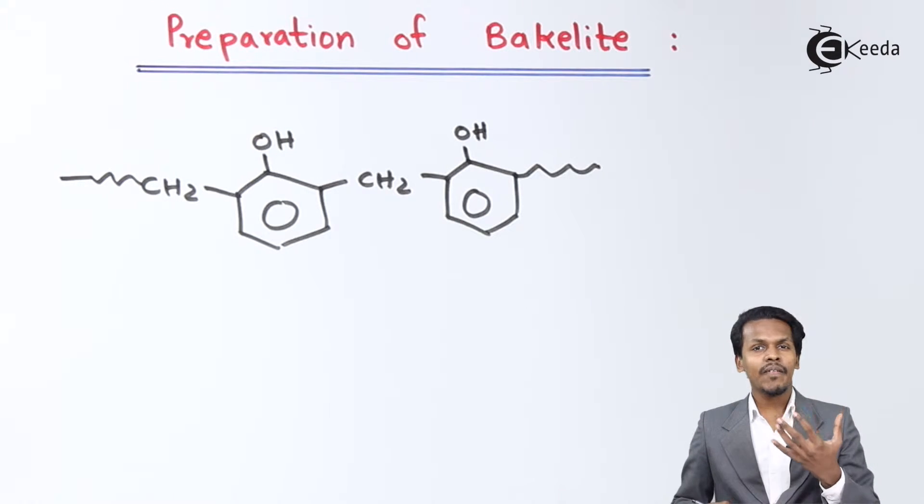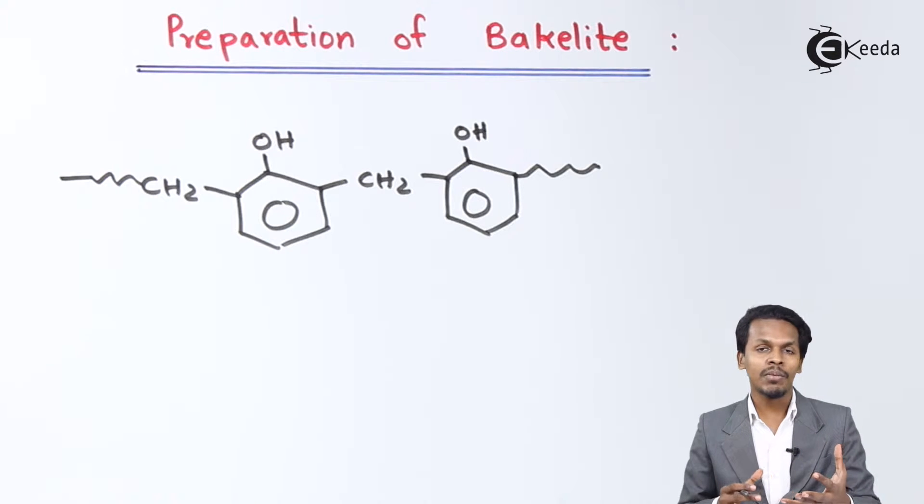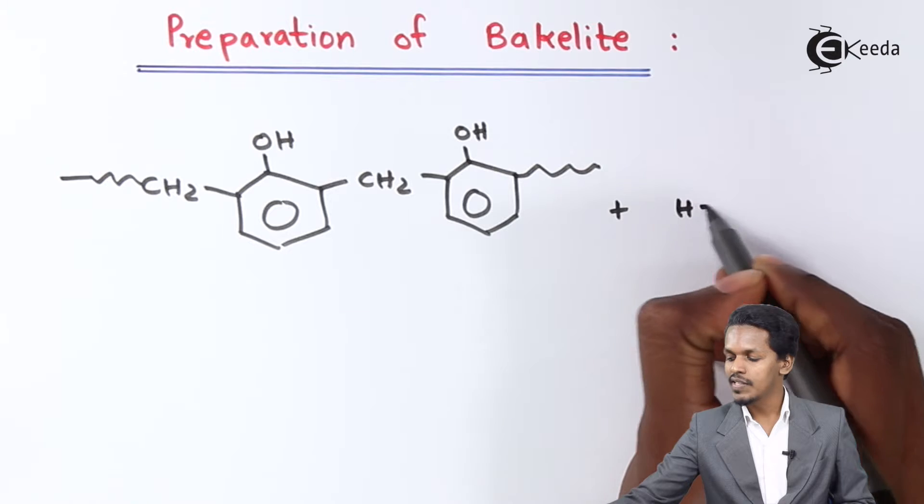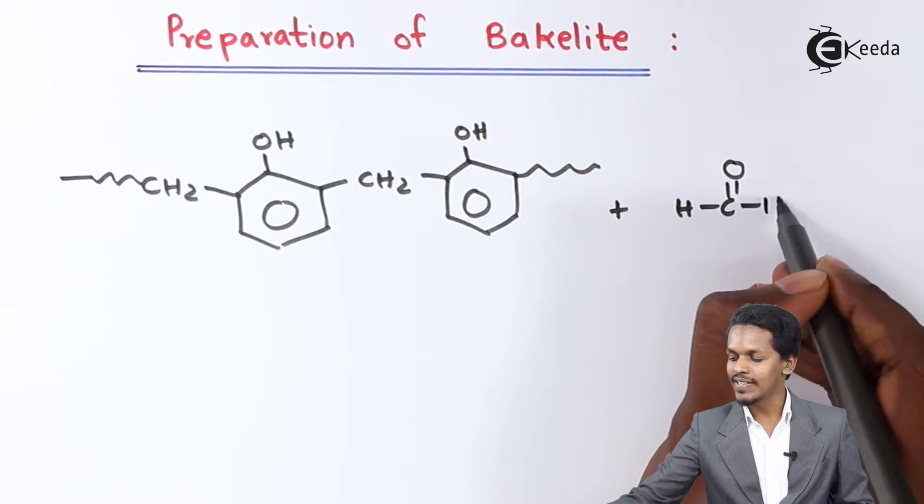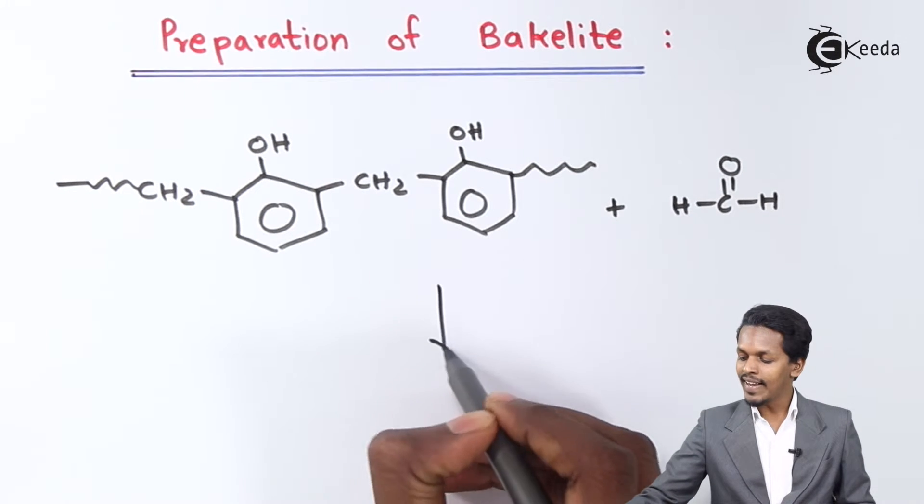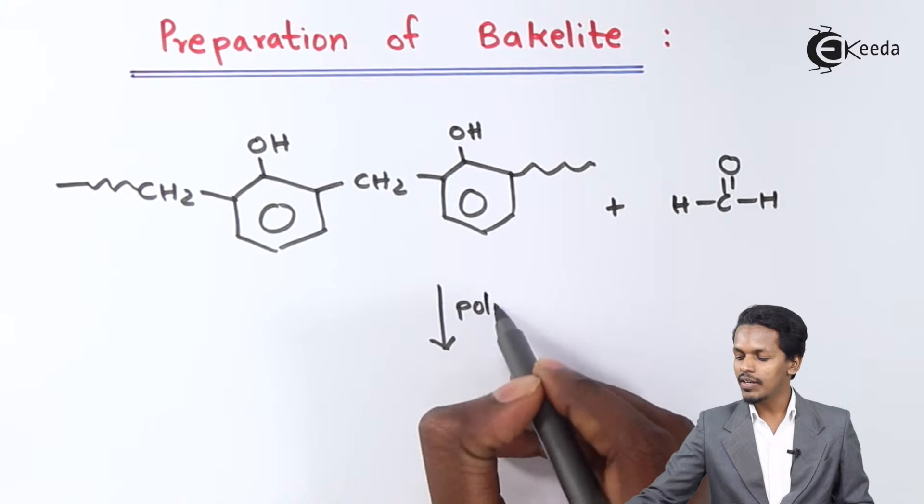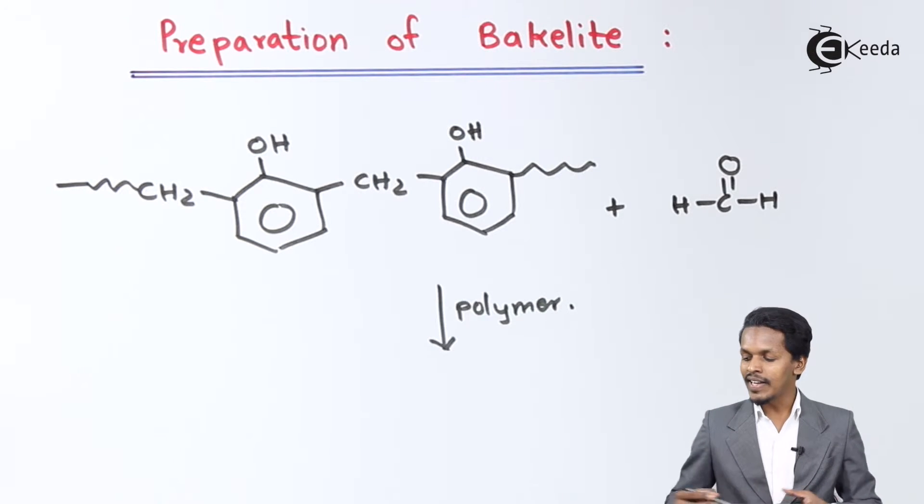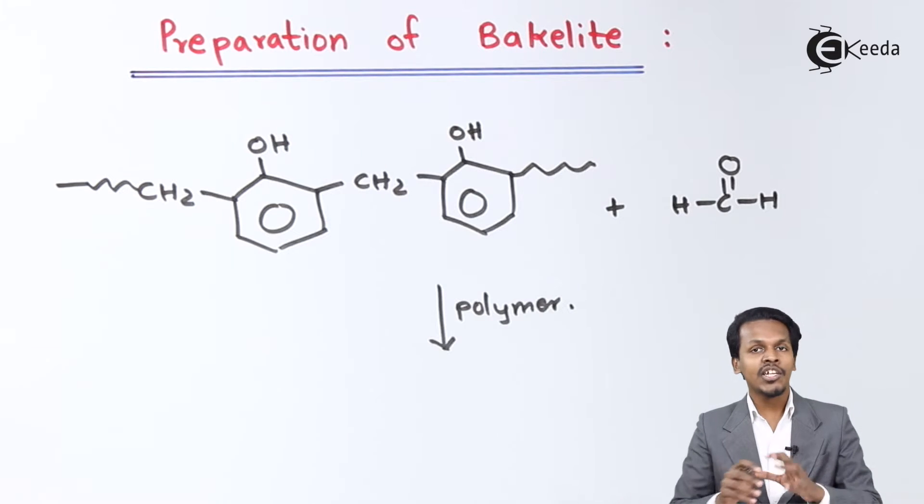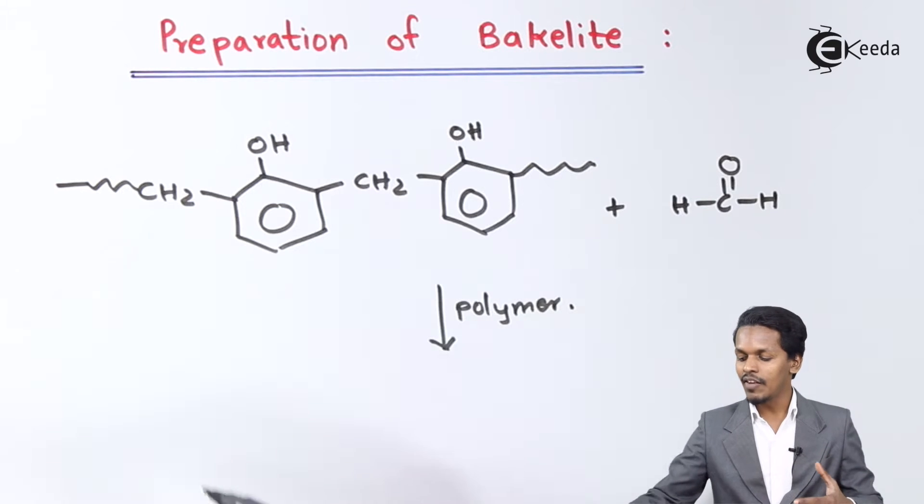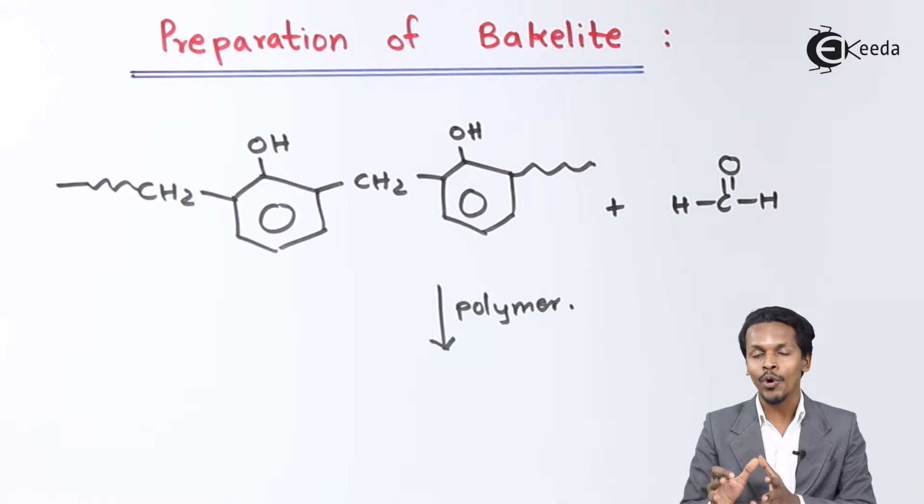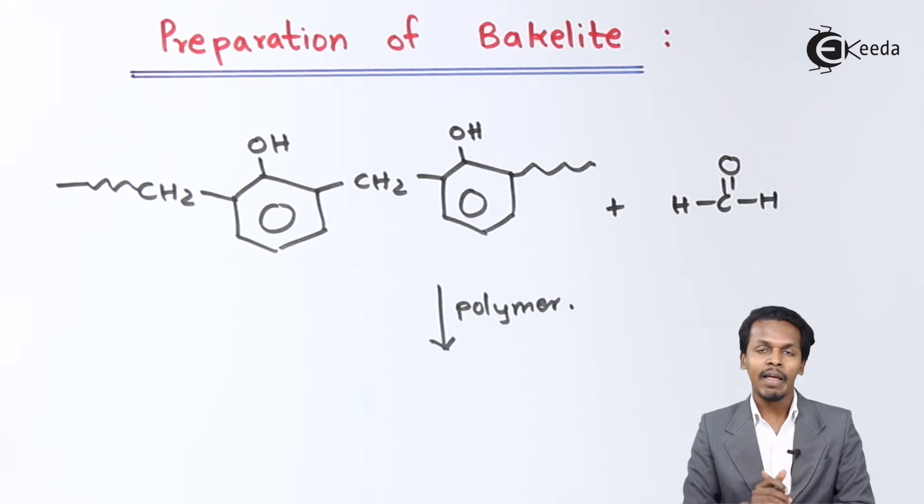Suppose we have two linear polymers of Novolac and we introduce formaldehyde (HCHO). If polymerization occurs, the two linear chains will be linked together with the help of this CH2 group. That is the structure of Bakelite.